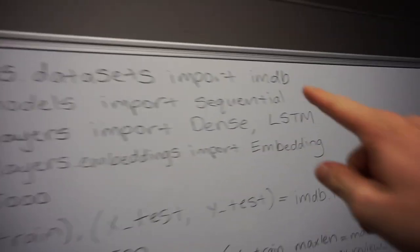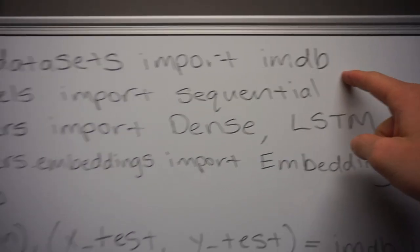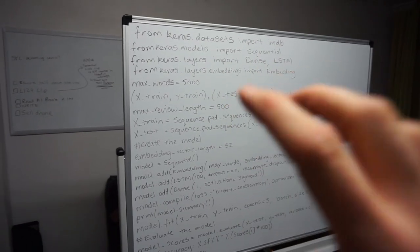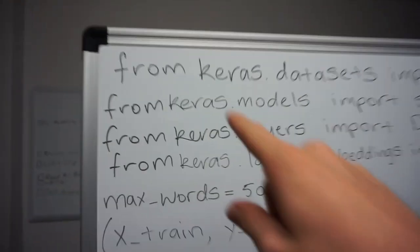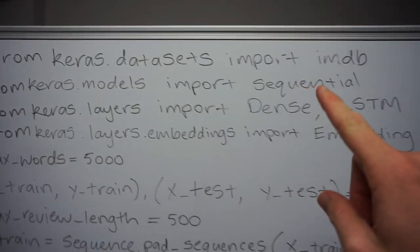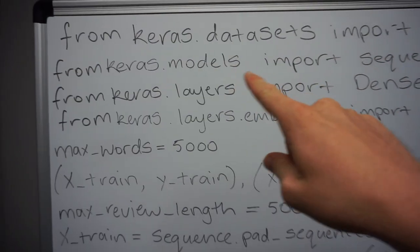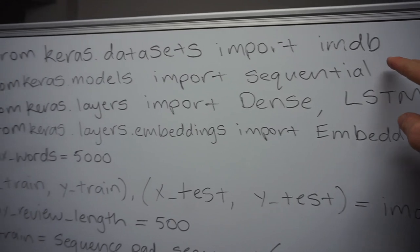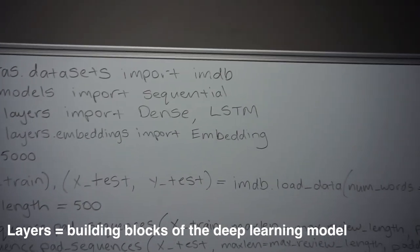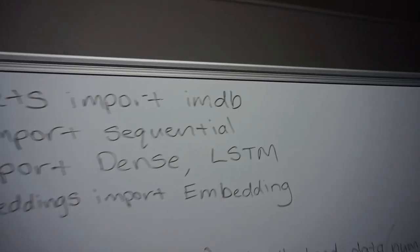This is a Keras model to analyze the IMDB dataset. If you're not familiar with Keras or Python I'll try to walk you through it, and I'll put a full link in the description to a Jupyter notebook so you can play around with it. Here are the dependencies: from Keras.datasets import IMDB, from Keras.models import Sequential, from Keras.layers import Dense and LSTM. LSTM is one of the best layers for sequence models, and IMDB is a database of movie review comments.